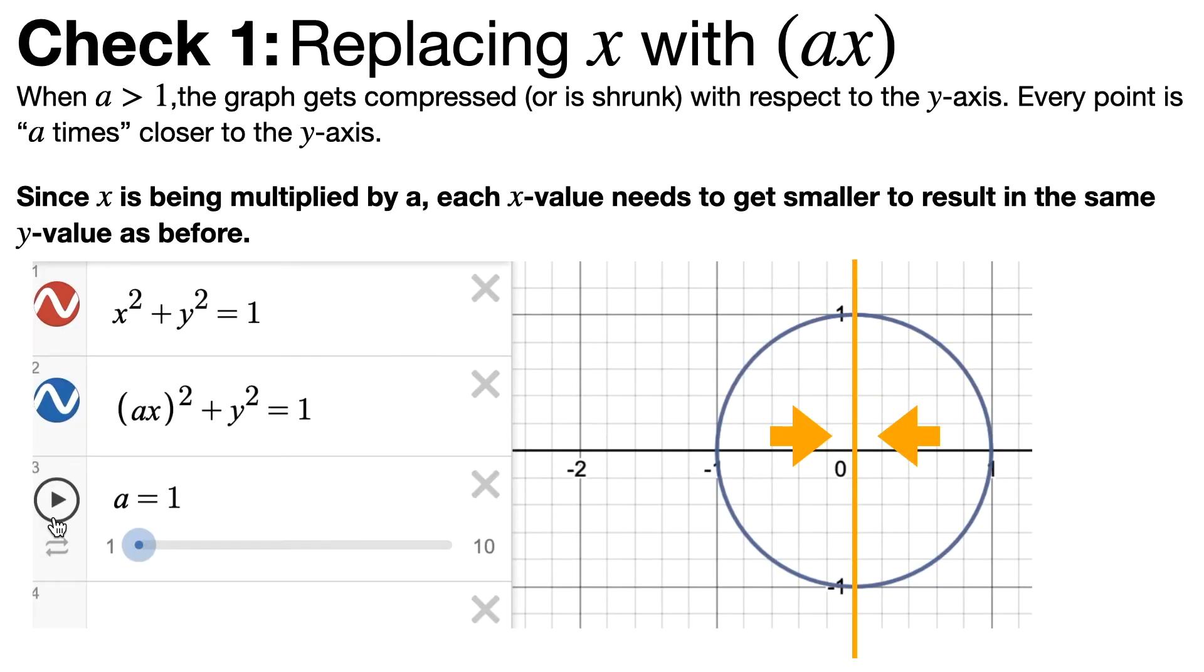When we replace x with ax, the graph gets compressed or shrunk with respect to the y-axis whenever a is greater than 1. Every point is going to be a times closer to the y-axis. Here's the animation. As a gets bigger, it gets closer and closer to the y-axis, compressed inward. The reason for this is that since x is being multiplied by a number, each x value on the graph has to be smaller so that y remains the same. It's a compensatory effect, just like the other substitution transformations we have seen.